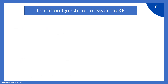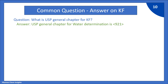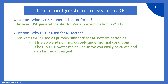Let us see some common questions and answers on KF. What is the USP general chapter for KF? The USP general chapter for KF water determination is 921. Next question: why is DST used for KF factor? DST is used as a primary standard for KF determination as it is stable and non-hygroscopic under normal conditions. It has 15.66% water molecules, so we can easily calculate and standardize the KF reagent.